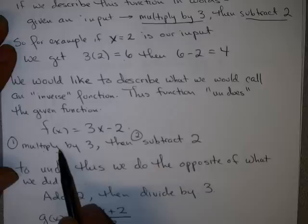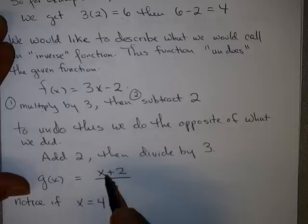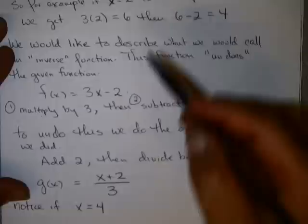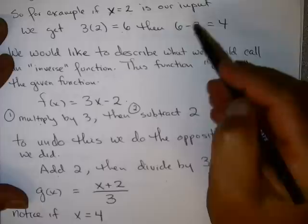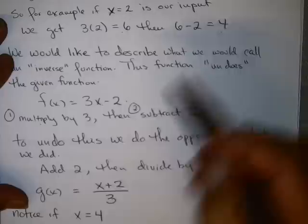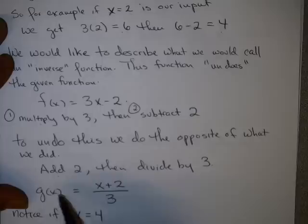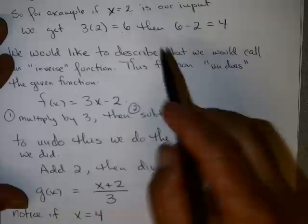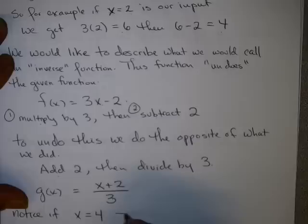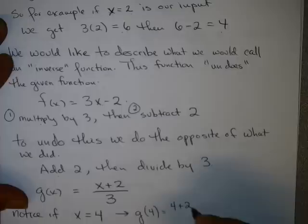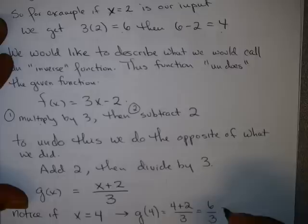If I want to write that in symbols, I take my number, I add 2, and I divide by 3. Let's see if this works. I gave you the input 2 for my original function, 3x minus 2, and that gave me the output of 4. Let's see what happens when I put in the input of 4 into this function. If this is truly the inverse, then it should give me, as the output, the value 2. What happens when I replace 4 for x? I get 4 plus 2 divided by 3. 4 plus 2 is 6. 6 divided by 3 is 2.